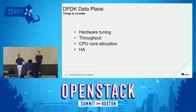In the DPDK data plane, these are the things to consider: one is hardware tuning, what kind of throughput you can get and what you should expect, the CPU core allocation, and high availability. We'll go through those things now.